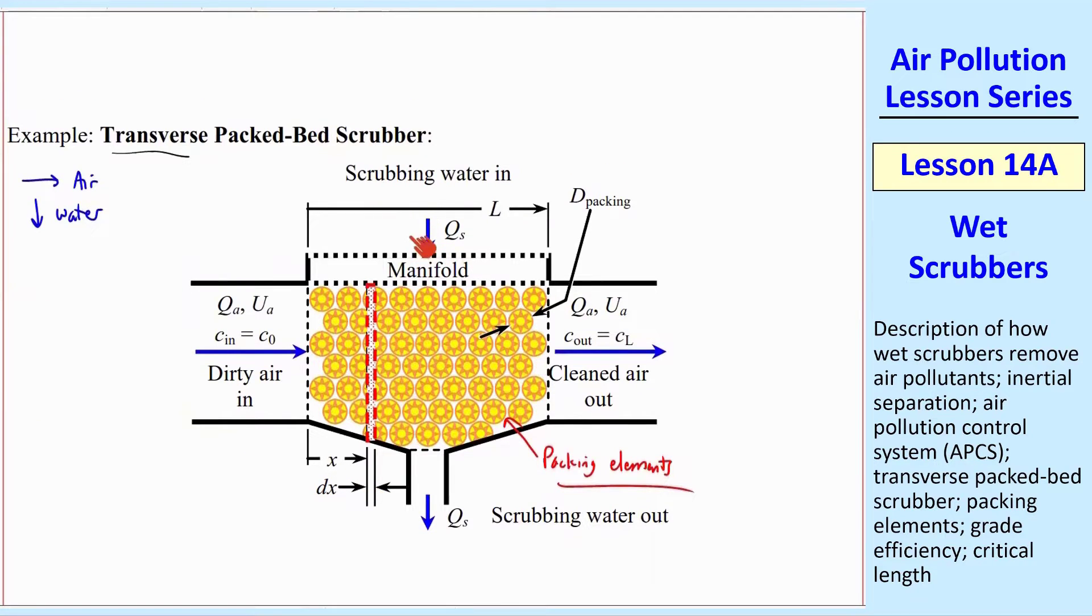In either case, a spray tower or a wet scrubber, you're taking air pollution out of the air and basically transferring it to the water. Now you have a water pollution problem, which you have to get rid of. But we let the civil engineers take care of that problem.